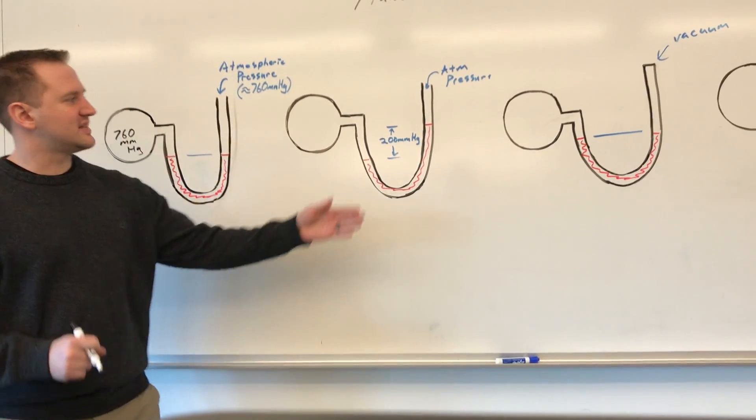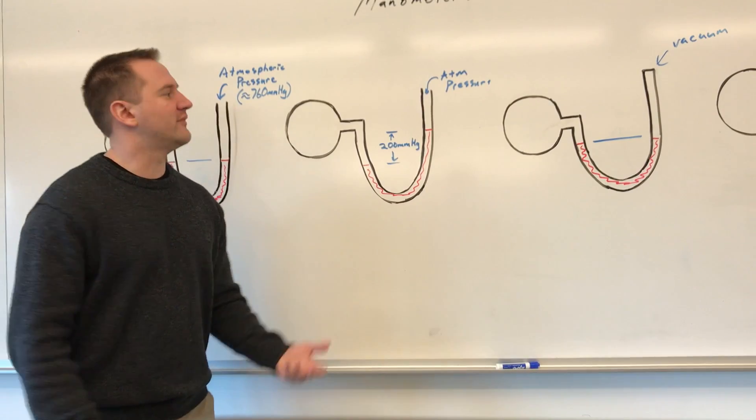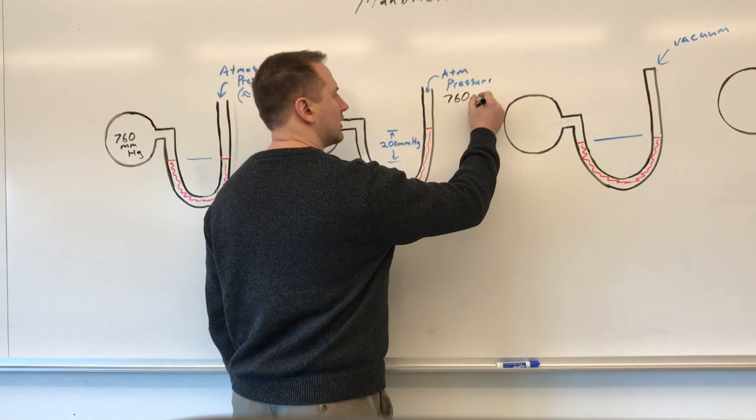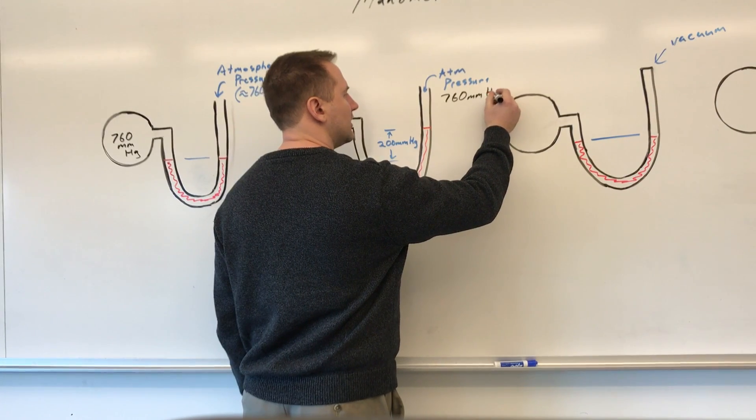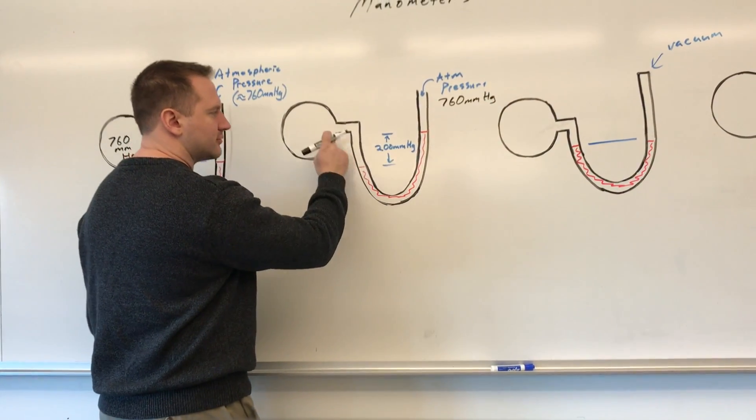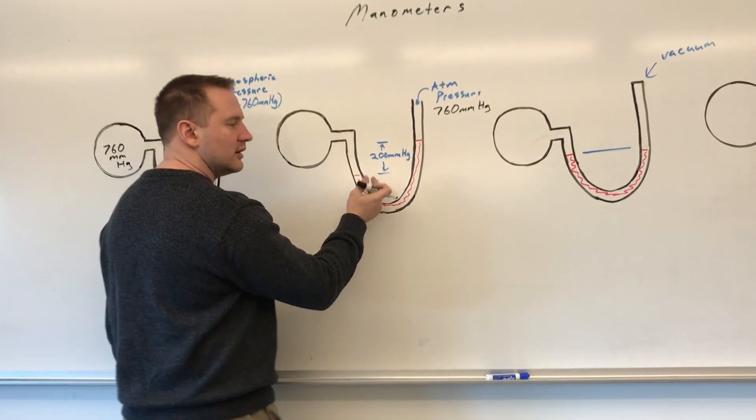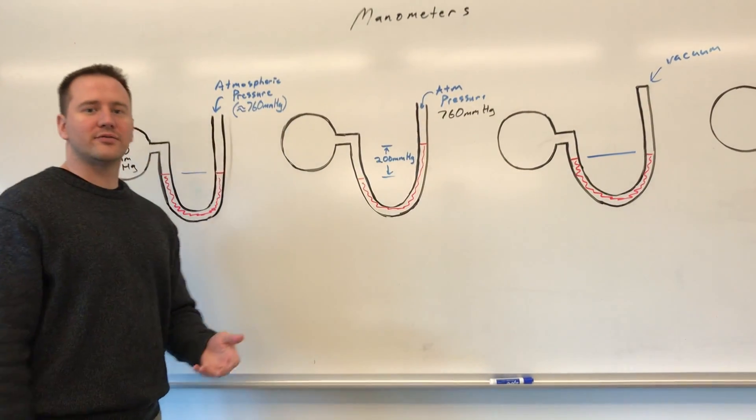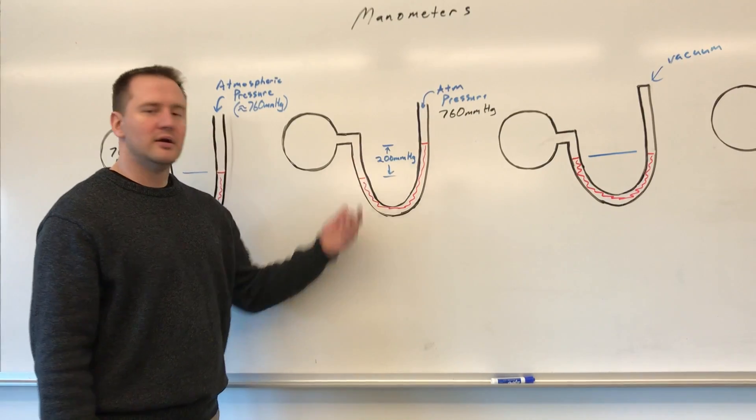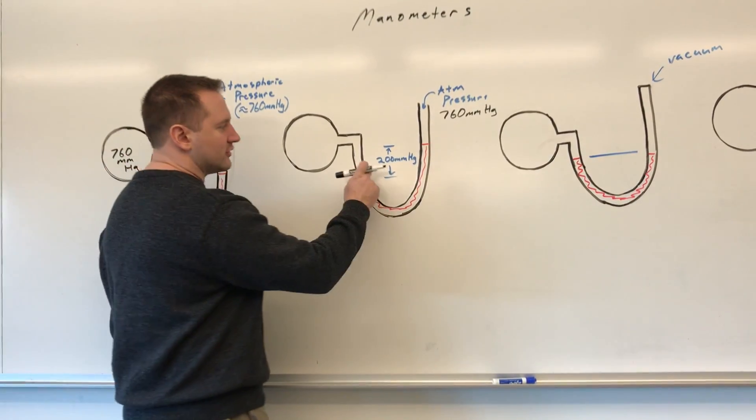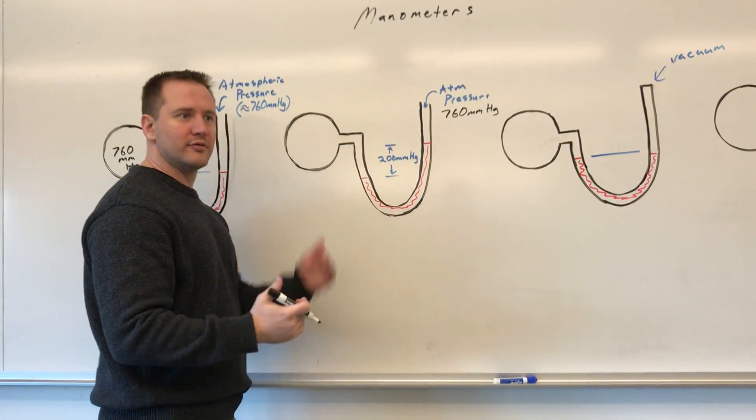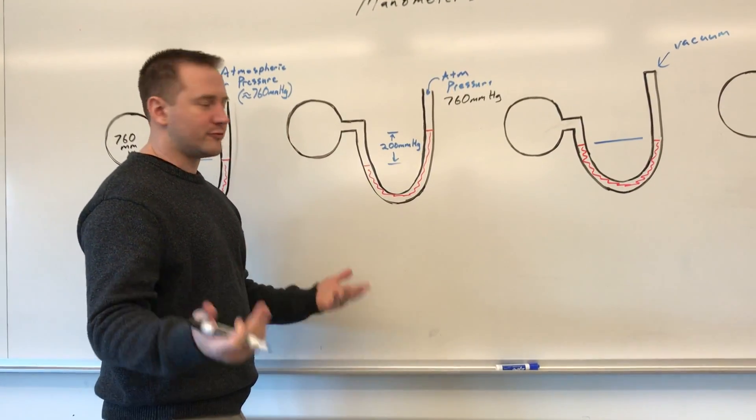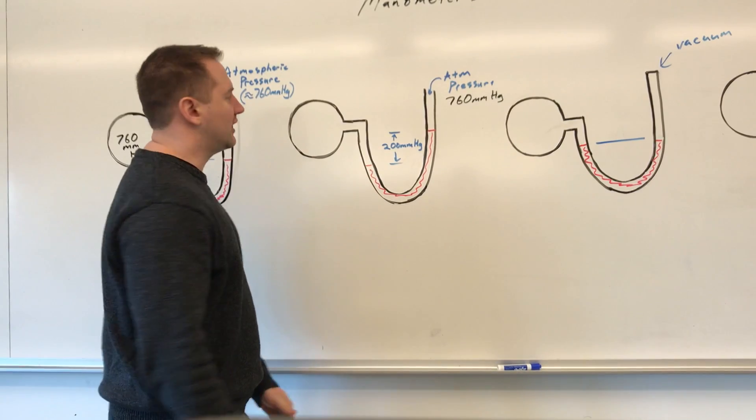Looking at the next one, if we have that same atmospheric pressure of 760 pushing down on the outside, we can see that the inside is pushing harder on it. Therefore the mercury gets pushed up the other end of the tube. You can measure the difference in pressure by the difference in height. If there's 200 millimeters of mercury of displacement, there's 200 millimeters of mercury worth of pressure greater in here than what is outside.